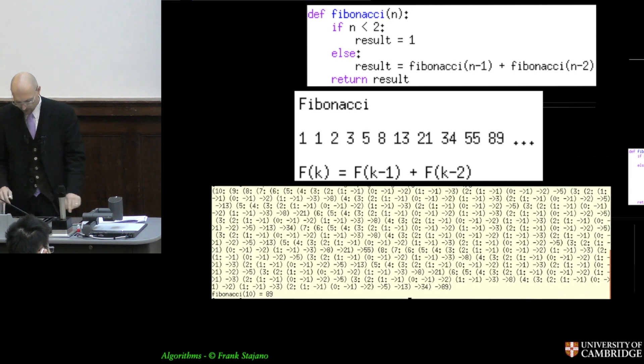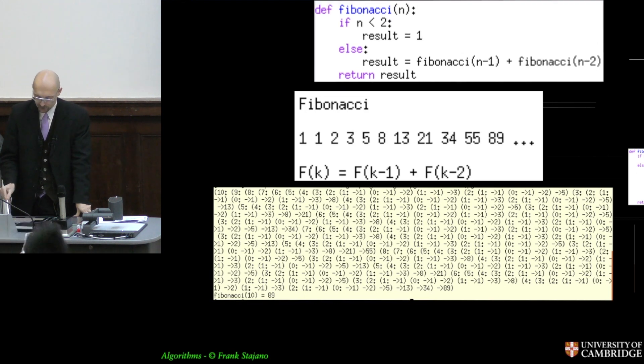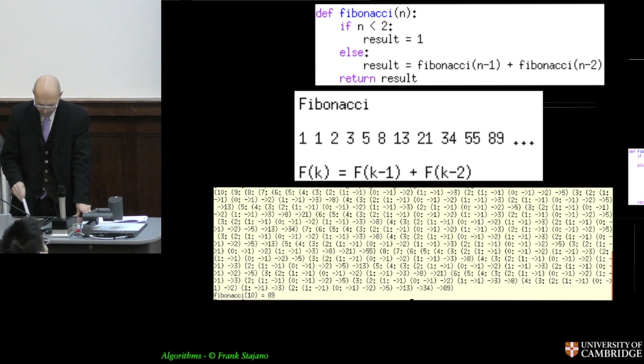Because what happens with something as small as just 10 is this. So you ask it to compute Fibonacci of 10. And it will first have to compute Fibonacci of 9 and 8. But to do 9 and 8, first it does 9. And to do 9, first it has to do 8. And it keeps recursing back until it gets to 1. When it gets to 1, it can go back and say, alright, that was 1. So it returns the value back to you.